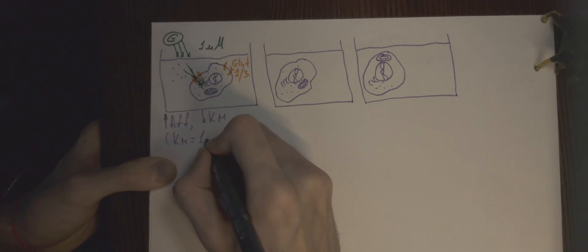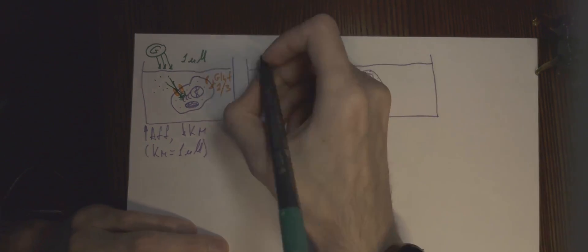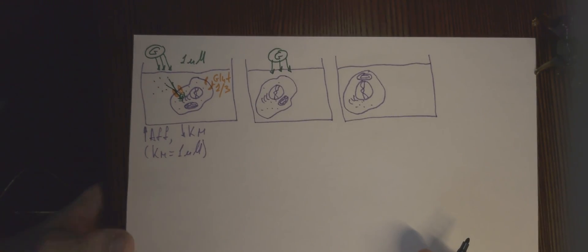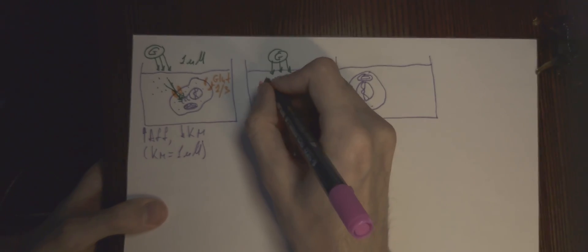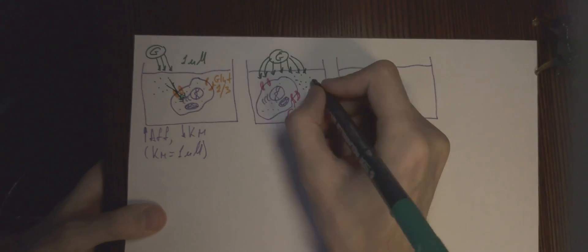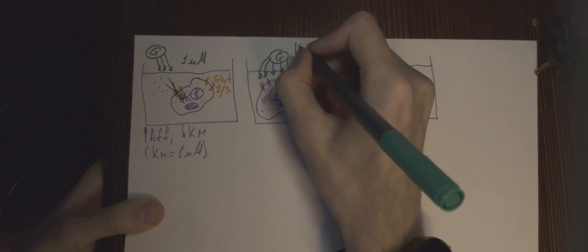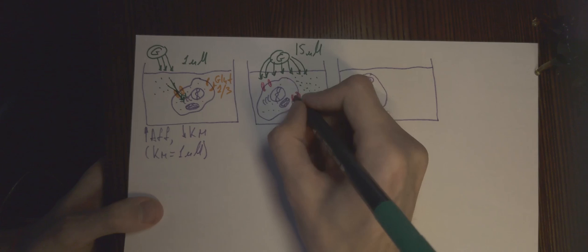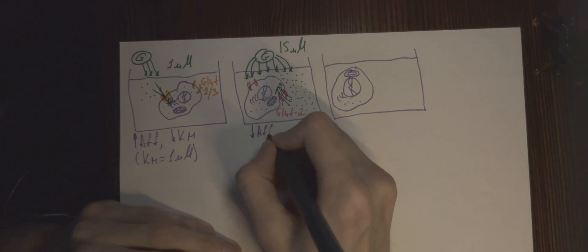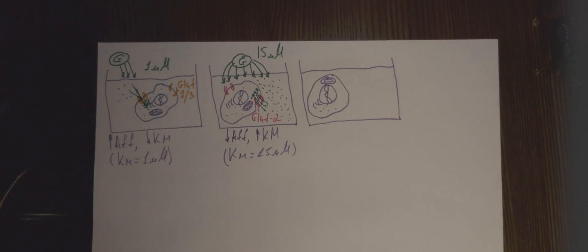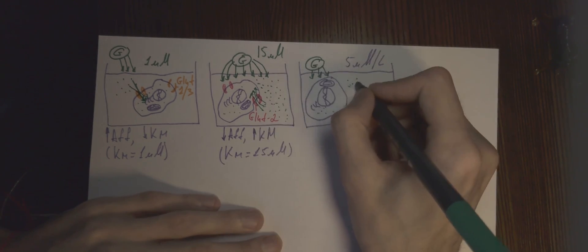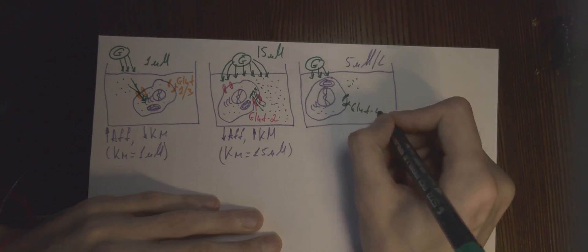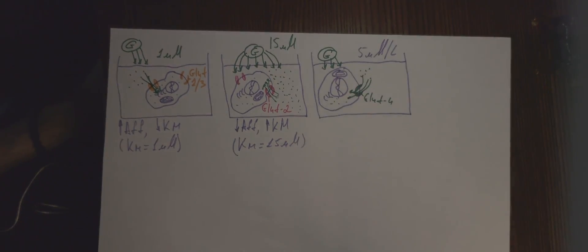In the second case, the cell does not reabsorb glucose in small concentrations, and I increase its concentration to 15 mM. After which transporters begin to work, indicating that the affinity for glucose is very low. This cell needs a large amount of glucose in the environment to ingest it. So the affinity is low, but KM is high. The third example is an intermediate.